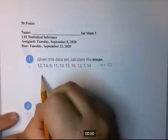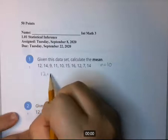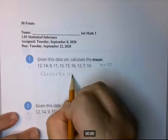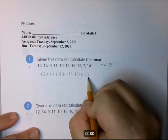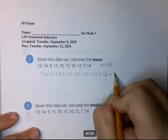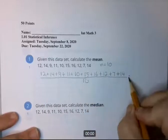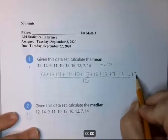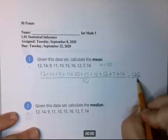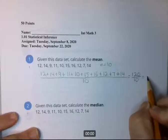So now we're going to go ahead and just set up the equation. There's the equation. It ends up the numbers on top add up to 120 divided by 10, so the mean is 12.